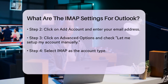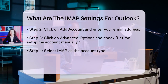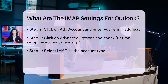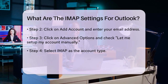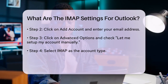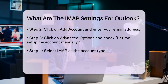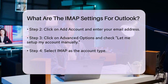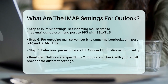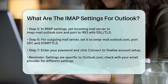In the IMAP account settings window, set the incoming mail server to imap-mail.outlook.com and the port to 993. Choose SSL/TLS as the encryption method. For the outgoing mail server, set it to smtp-mail.outlook.com with the port 587 and encryption method StartTLS.